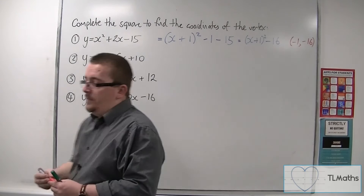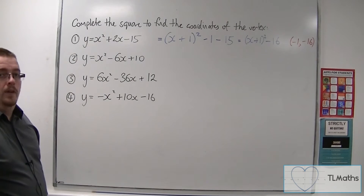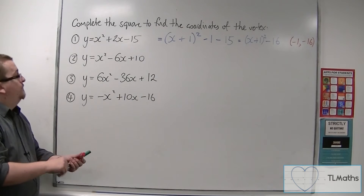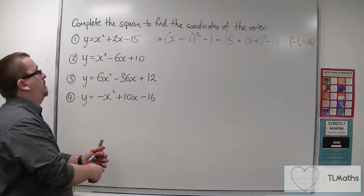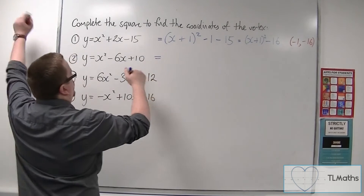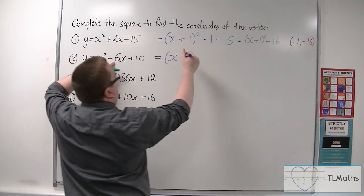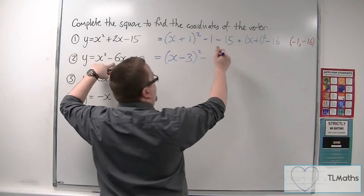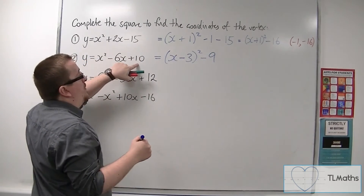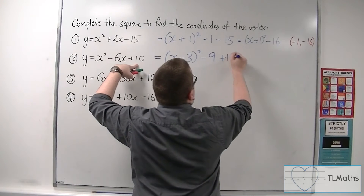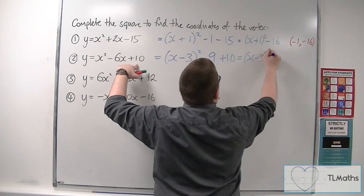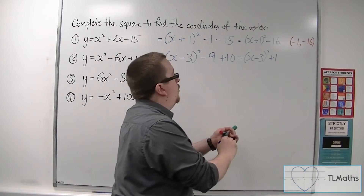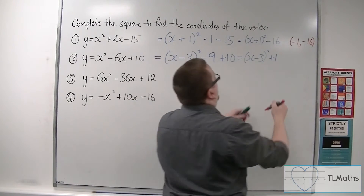This is going to be an important part of the process for transformations in Core 1. Let's look at number 2: y is equal to x squared minus 6x plus 10. We halve the 6 to get 3, so we get x minus 3 squared. Take away the square of minus 3, so take away 9, and we've still got the plus 10 on the end. So we've got x minus 3 squared, take away 9 plus 10, so plus 1. The coordinates of the vertex are 3, 1.